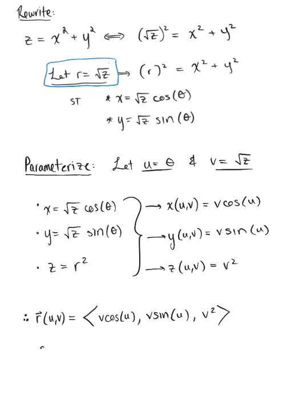This is such that u is greater than or equal to 0 and less than or equal to 2 pi, and v is greater than or equal to 0 and less than or equal to 3.